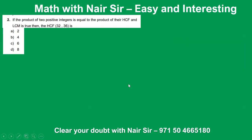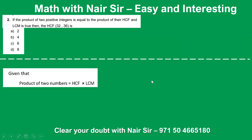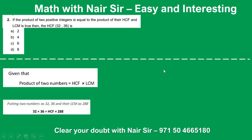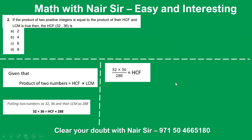Second question: If the product of two positive integers is equal to the product of their HCF and LCM, then what is the HCF of 32 and 36? The two numbers given are 32 and 36. Their product is equal to HCF multiplied by LCM.